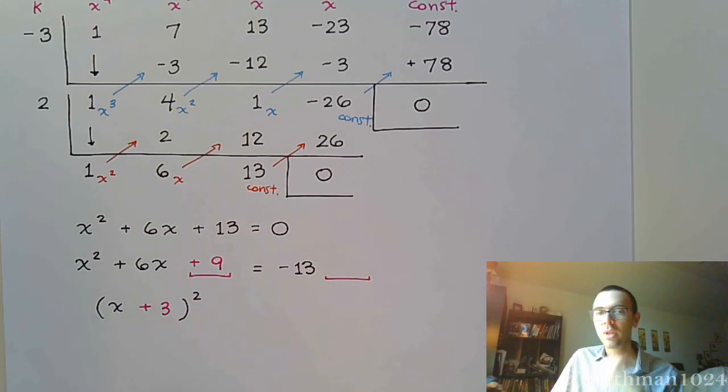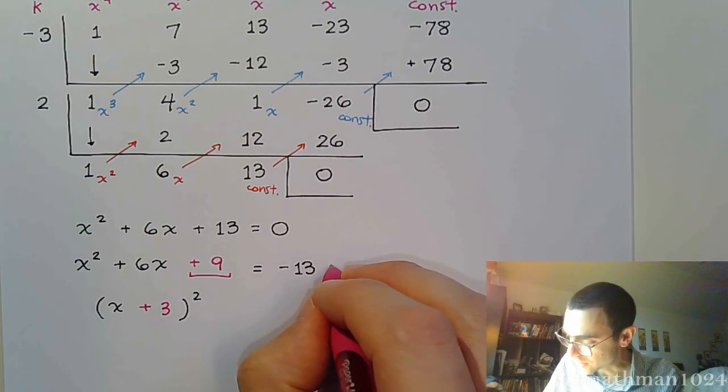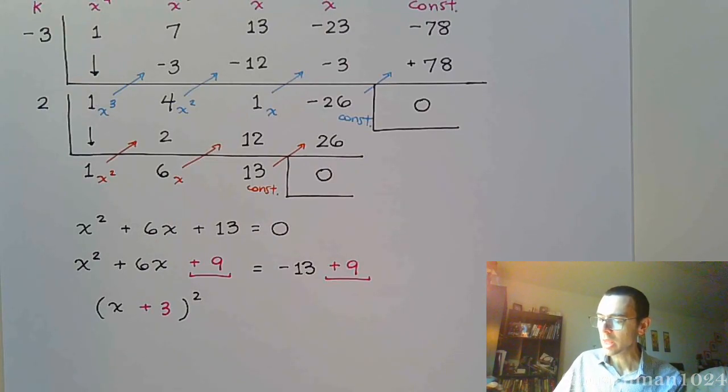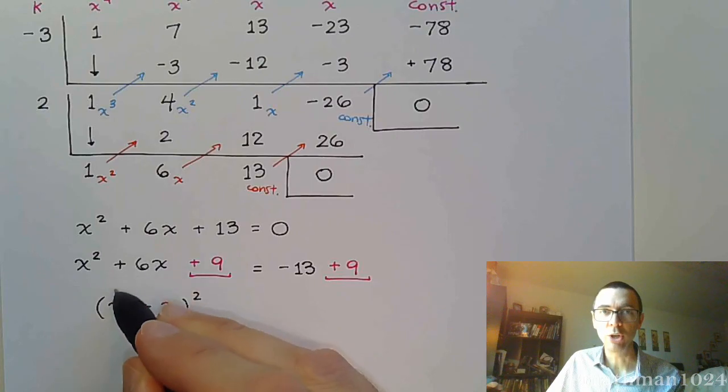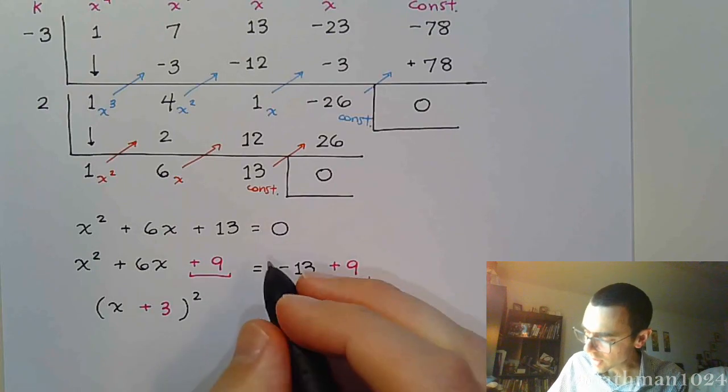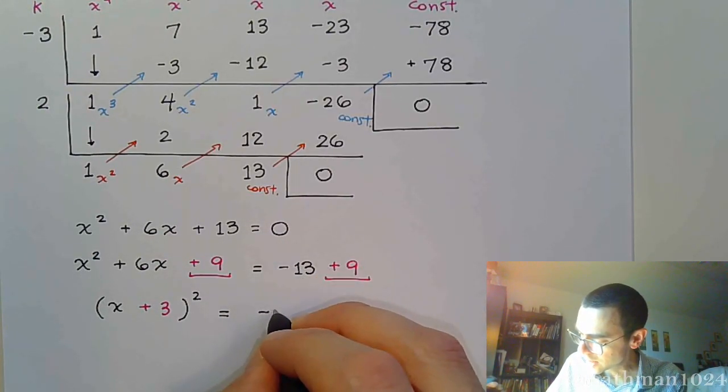So we added 9 on this side, but to maintain balance, we have to add 9 on the right side as well. We added 9 on the left so that we could get a perfect square trinomial so that it could factor as that little binomial square. On the right side, when we keep the balance there, combine these guys, and we get negative 4.